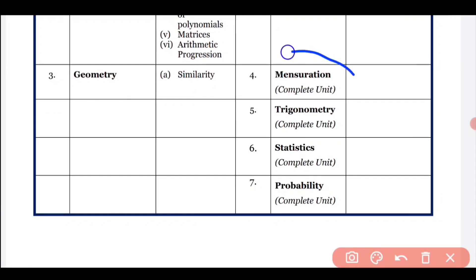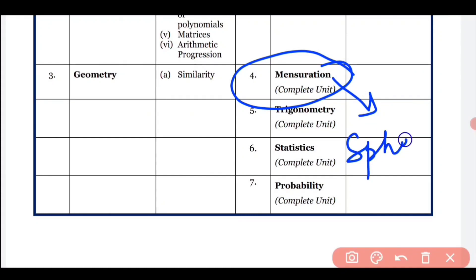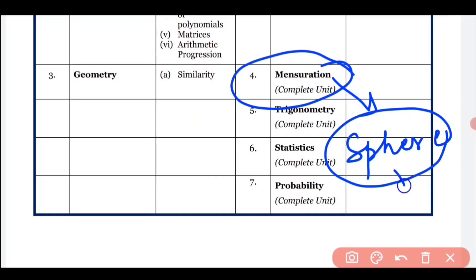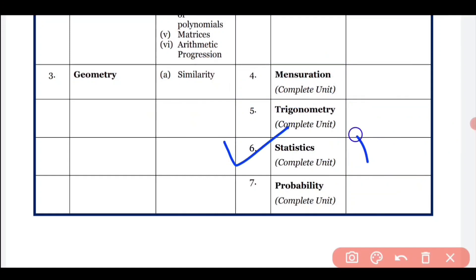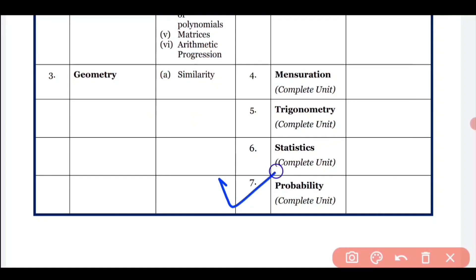Mensuration is reduced — the Sphere portion has been removed. Only Cylinder and Cone are to be studied. Sphere has been excluded, so you don't have to do the Sphere exercise from the book. In Statistics, there is no reduction, so you have to complete all of Measures of Central Tendency.